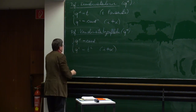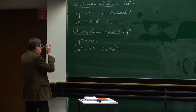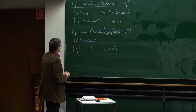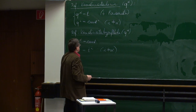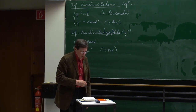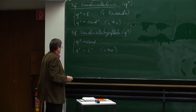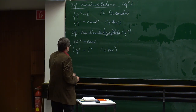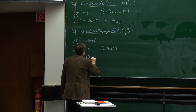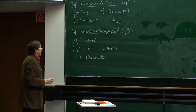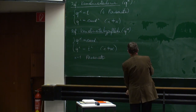Hier haben wir es so, dass gerade diese eine Koordinate Q_Alpha, die zur Koordinatenhyperfläche gehört, konstant sein soll. Alle anderen Koordinaten sollen variieren. Dadurch unterscheidet sich das ganz entscheidend: man hat hier, weil I ungleich Alpha sein soll, N-1 Parameter. Oben hat man einen Parameter, hier sind es N-1 Parameter. Daher ist die Koordinatenlinie naturgemäß eindimensional, aber die Koordinatenhyperfläche N-1-dimensional.